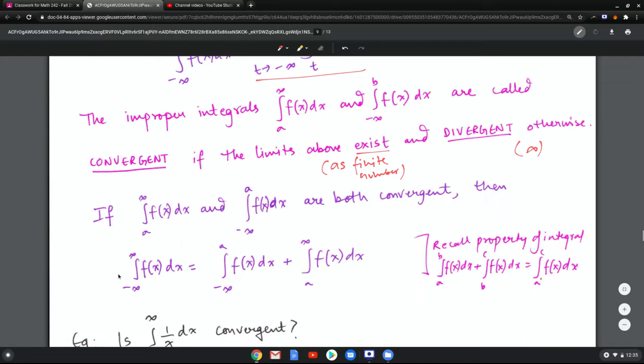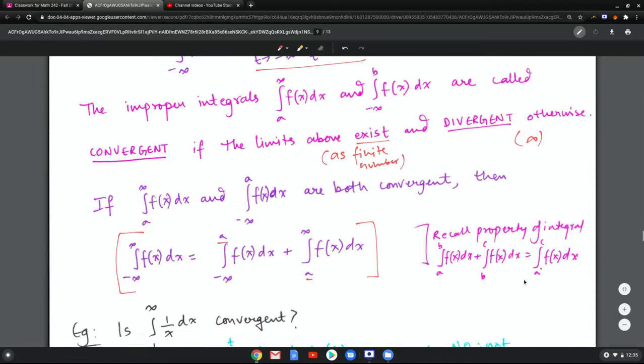And then if both a to infinity and negative infinity to a are convergent, then you can even find the area over the entire domain negative infinity to infinity by splitting it along a. Now you recall the property of definite integrals as you can split.